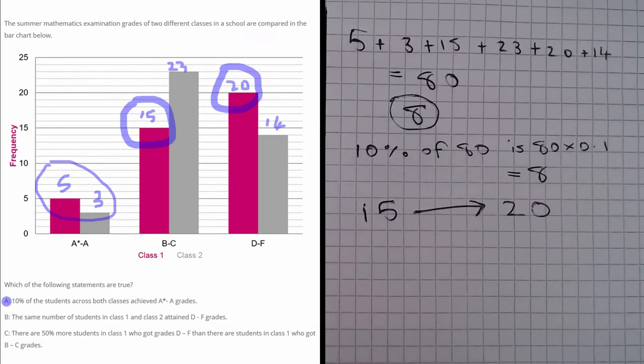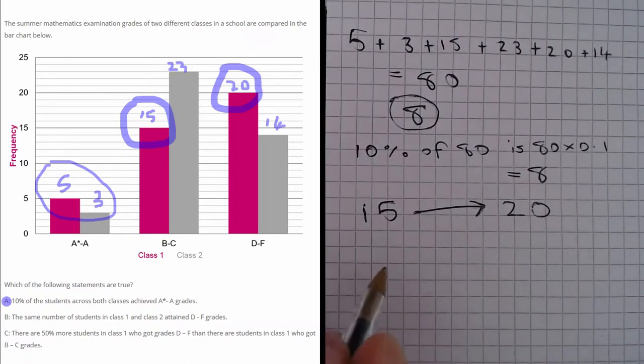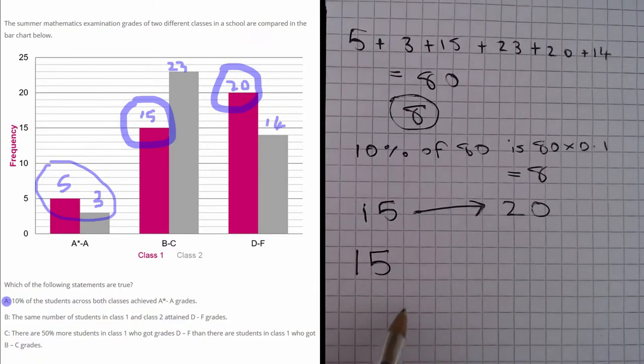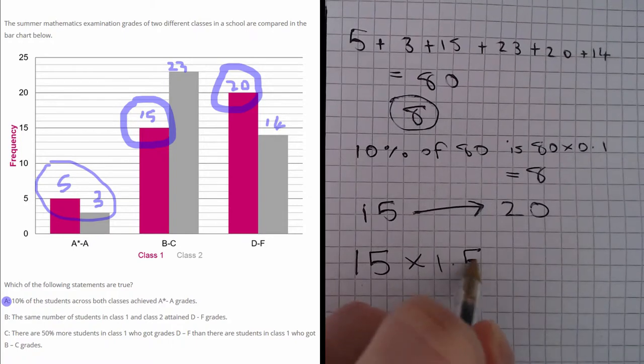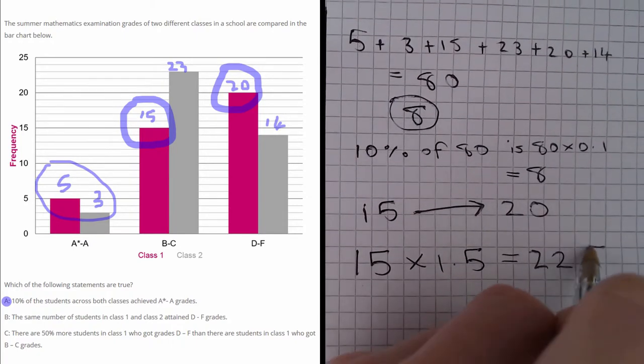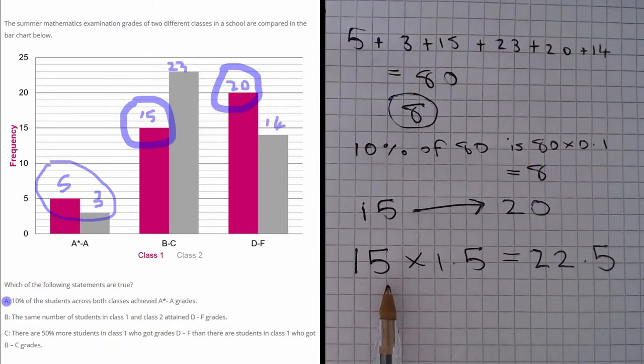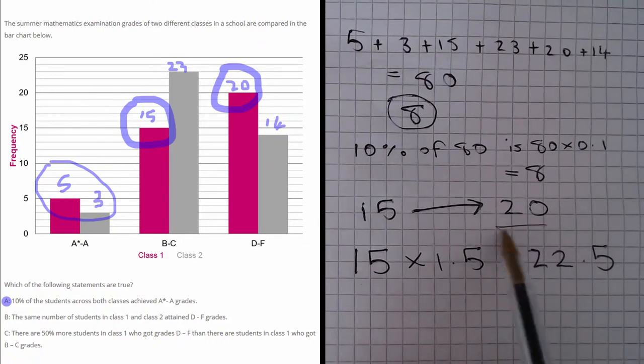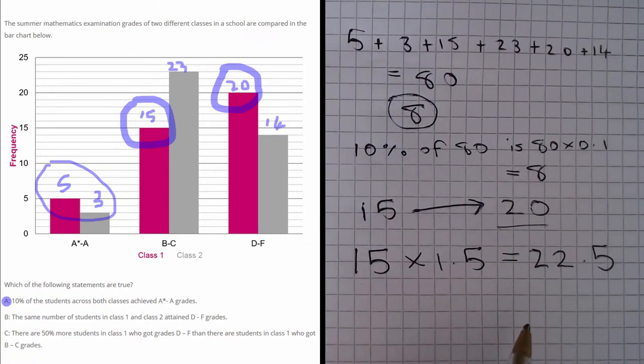Well let's assume there was a 50% increase. So we started with 15. Now if we increase the number by 50% we multiply it by 1.5. And if we do that calculation we get 22.5. So if there was a 50% increase we would have 22.5 but we don't, we have 20. So we know that C is false.